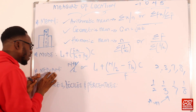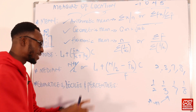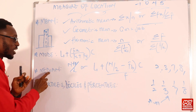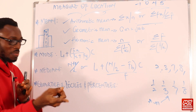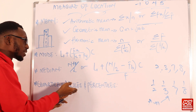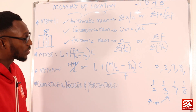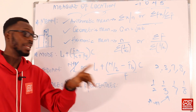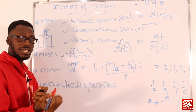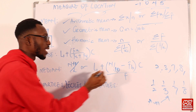Now let's look at quartiles, deciles, and percentiles. Median divides data into 2 parts; quartiles divide data into 4 parts; deciles divide data into 10 parts; percentiles divide data into 100 parts. The second quartile is actually your median. The formula structure is similar — for quartiles you use n/4, for deciles n/10, and for percentiles n/100, adjusting by the specific quartile, decile, or percentile number.